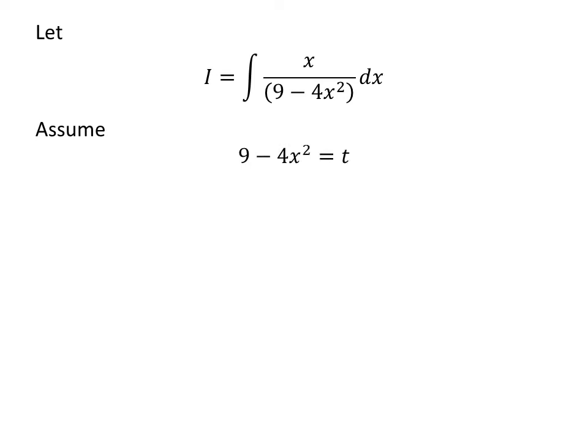We will solve the integral by application of the substitution method. Let us assume 9 minus 4x squared is equal to t.